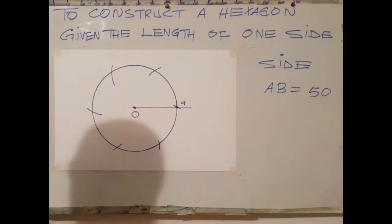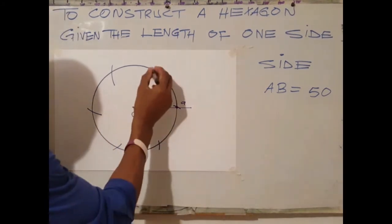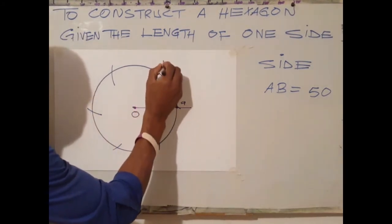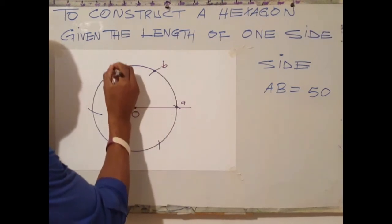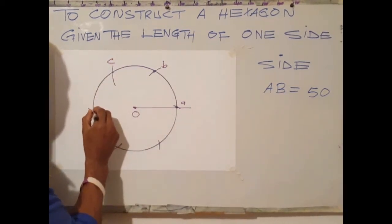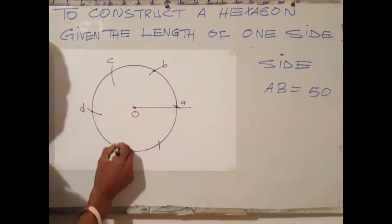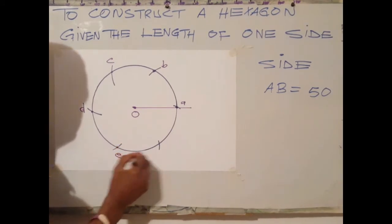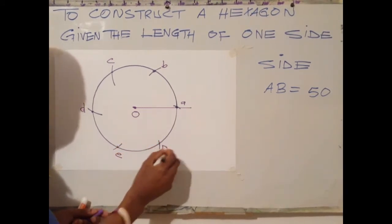The next step is to label B, C, D, E, point F.